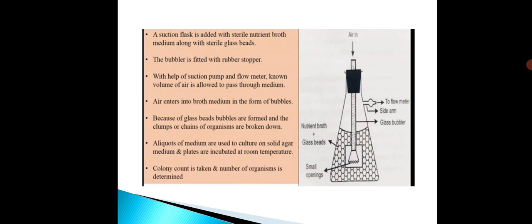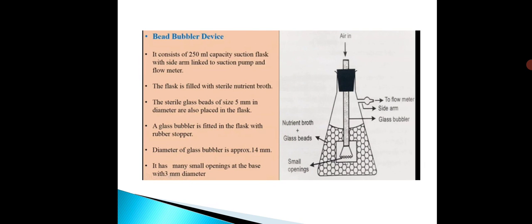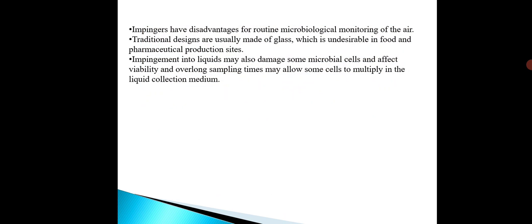This is the method for measuring microorganisms present in atmospheric air using the bead bubbler device. Looking at the advantages: we can analyze the volume of air due to the presence of the flow meter, measuring how much volume of air has entered. Secondly, because of the glass beads and bubble formation, microorganism clumps and chains are separated from each other, so finite or single isolated colonies can be obtained.